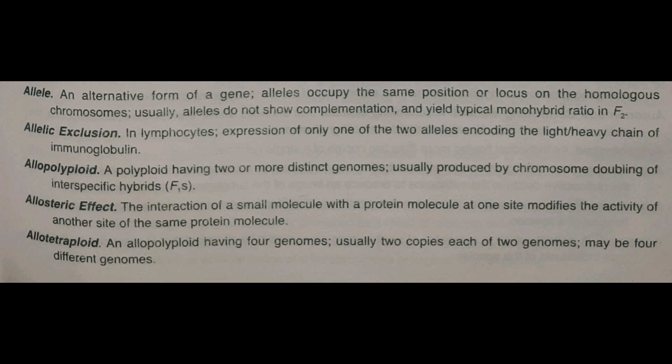Next and last for today - allotetraploid. Jaise bataya, alloploidy mein alag-alag genomes ek saath aate hain. Allotetraploid matlab 4 different genomes - having 4 genomes, usually 2 copies each of 2 genomes, or it may be 4 distinct genomes. Similarly, allotriploid vagera bhi hota hai.